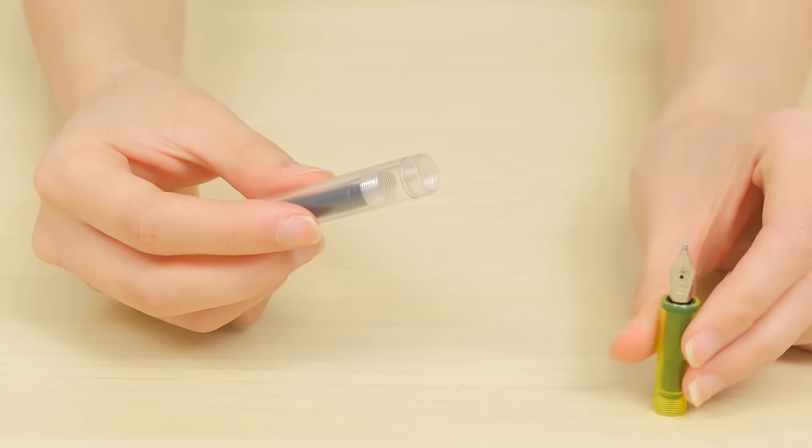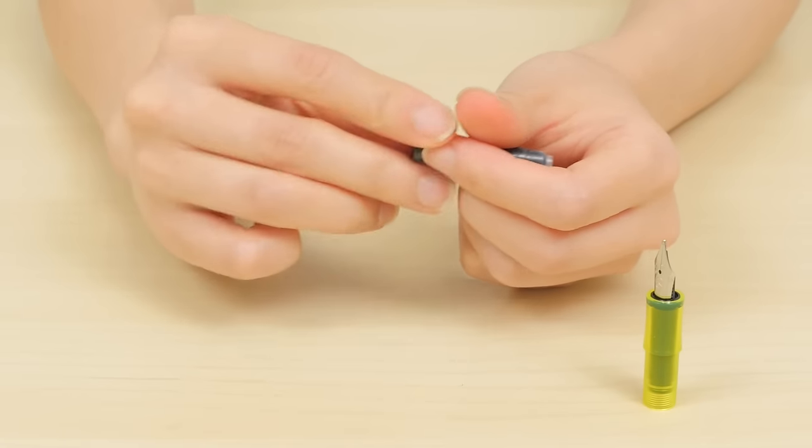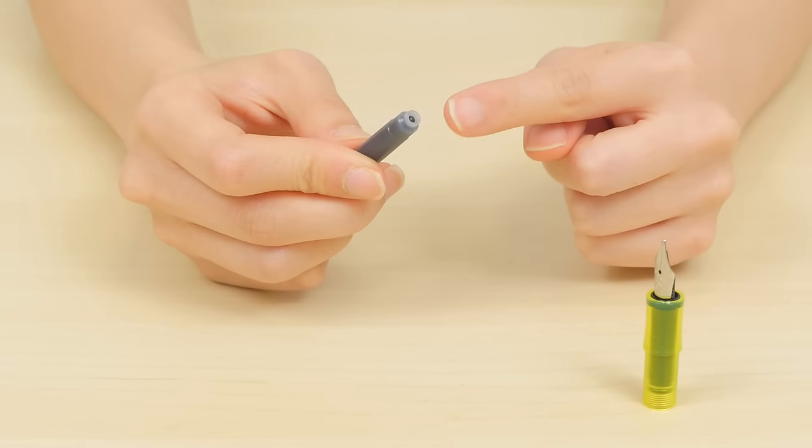First, unscrew the barrel and remove anything that's stored inside. Next, find the cartridge's opening. The correct end usually has a cup-like rim.